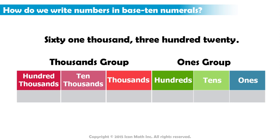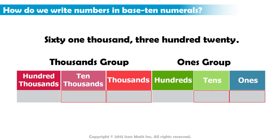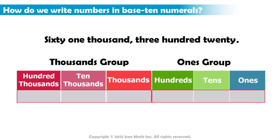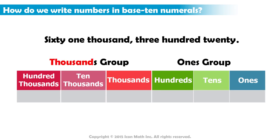Every group contains a number. It could be a one-digit, two-digit, or three-digit number. To read a number in a group, we read out the number, then follow it with the value of the group in the singular form.